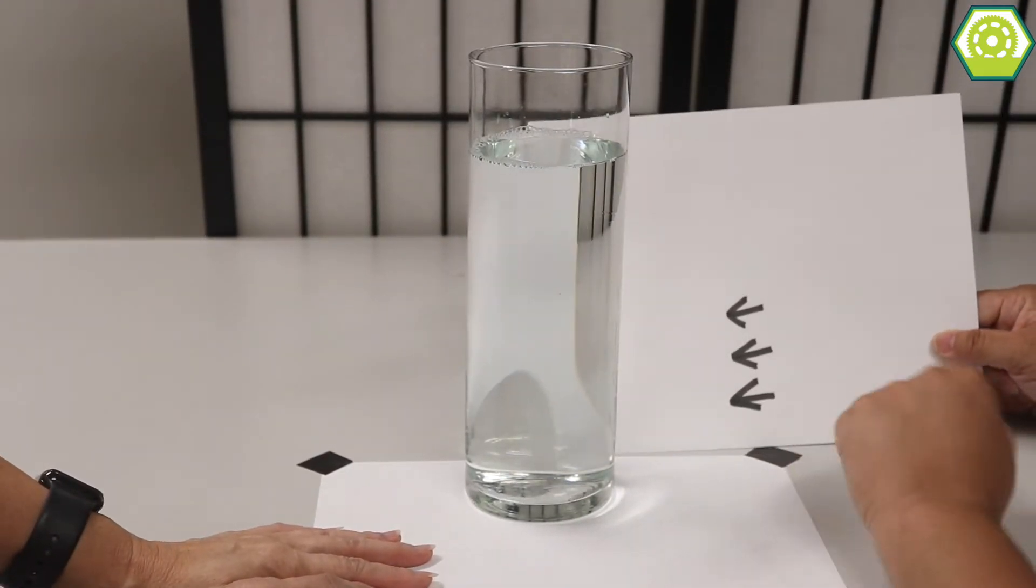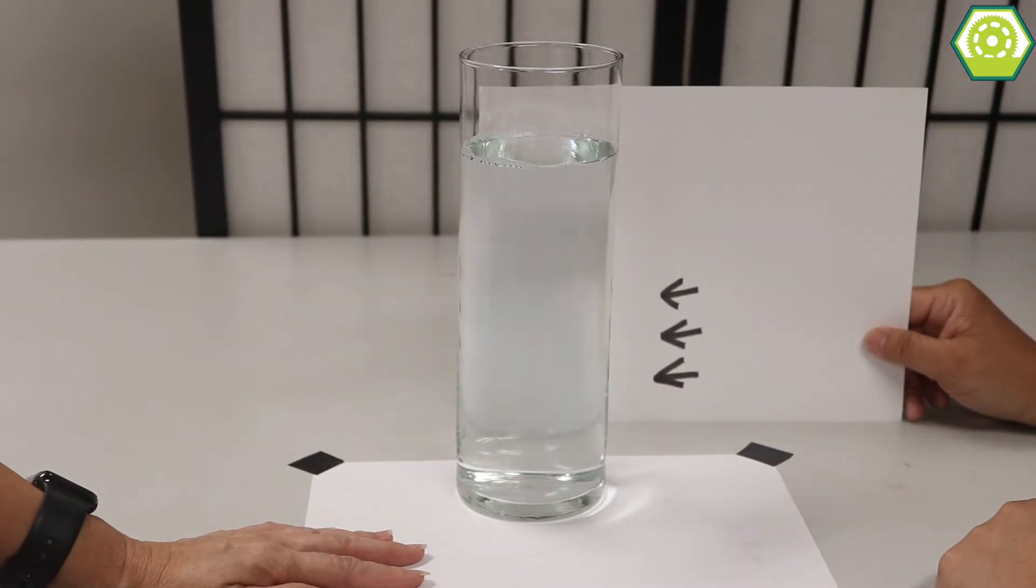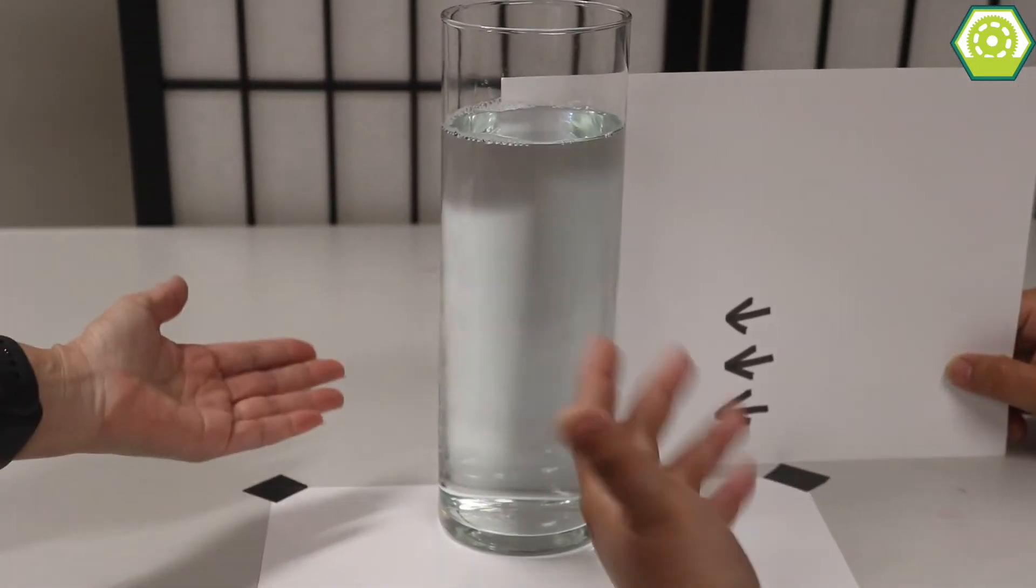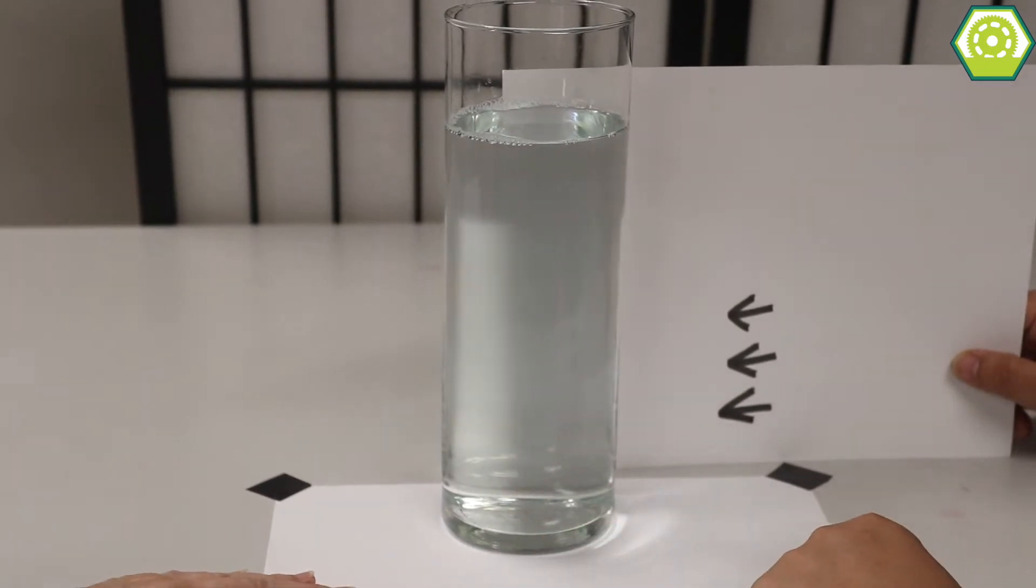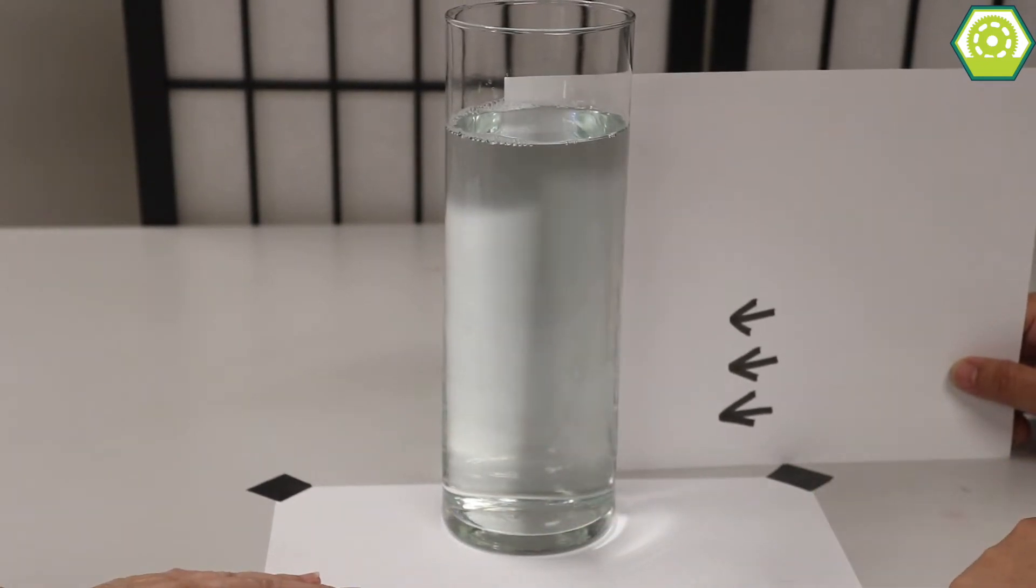But I've got this card that has some arrows on it and I just drew them with a marker. And today we are going to use this glass of water to make these arrows change direction using refraction. Are you ready?